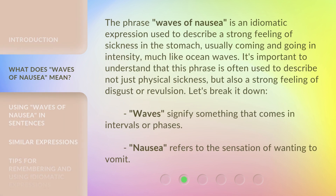The phrase 'waves of nausea' is an idiomatic expression used to describe a strong feeling of sickness in the stomach, usually coming and going in intensity, much like ocean waves. It's important to understand that this phrase is often used to describe not just physical sickness, but also a strong feeling of disgust or revulsion. Let's break it down. 'Waves' signify something that comes in intervals or phases. 'Nausea' refers to the sensation of wanting to vomit.